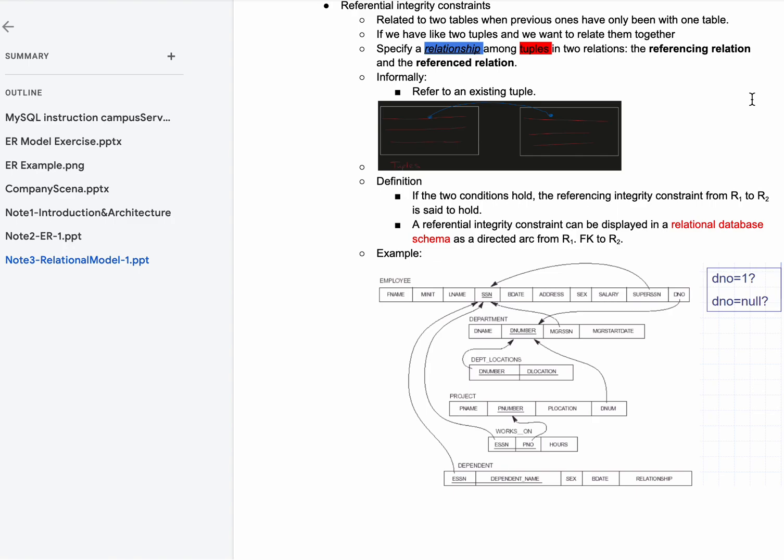If we have two tuples from different tables and we want them to relate to each other, we're going to specify a relationship among the tuples in the two relations.